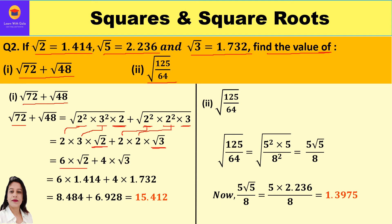So √72 + √48 = 6√2 + 4√3. Substituting the given values: 6 × 1.414 + 4 × 1.732 = 8.484 + 6.928 = 15.412.